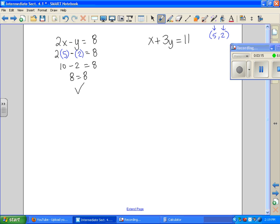It worked in the first equation. Now I try it in my second equation. I'm going to plug 5 in for x, 2 in for y. Bring everything else down exactly like it is. 2 times 3 is 6. 11 equals 11. Check.